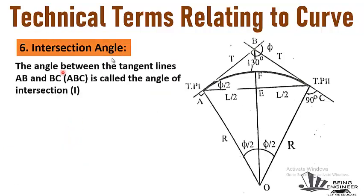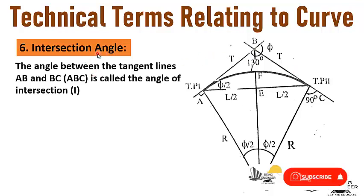The sixth term is intersection angle. The tangent lines we have are AB and BC. The angle formed at the intersection point of these two tangent lines is called the intersection angle. It is obvious from the name.